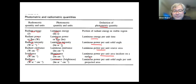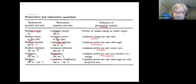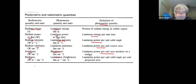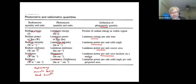You have to look at the application. Where do you think the radiometric approach is used? Everything that involves electromagnetic radiation — absolute measurement of electromagnetic radiation. You can use it in astronomy, remote sensing, and heat transfer.